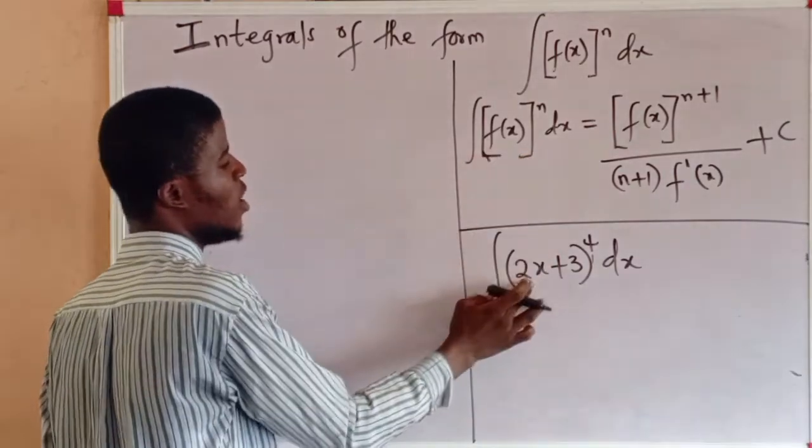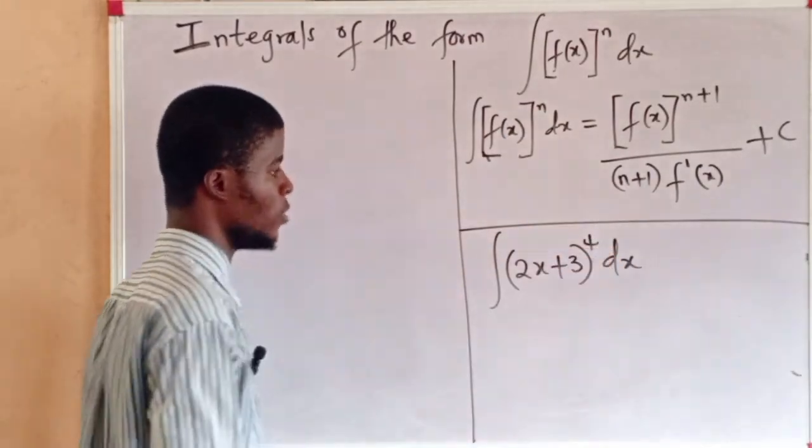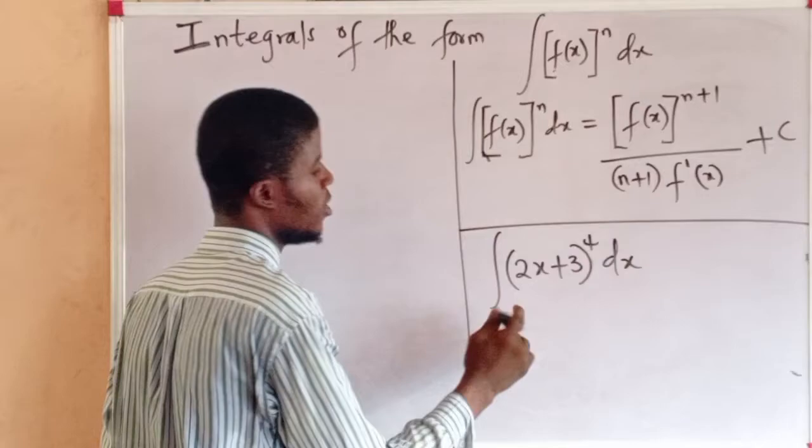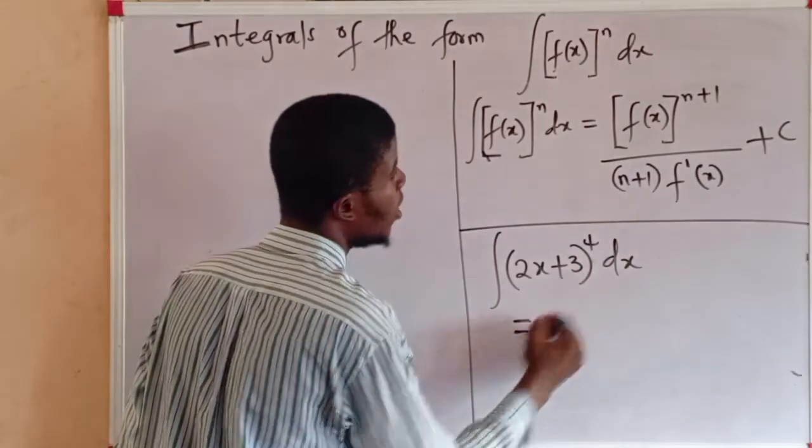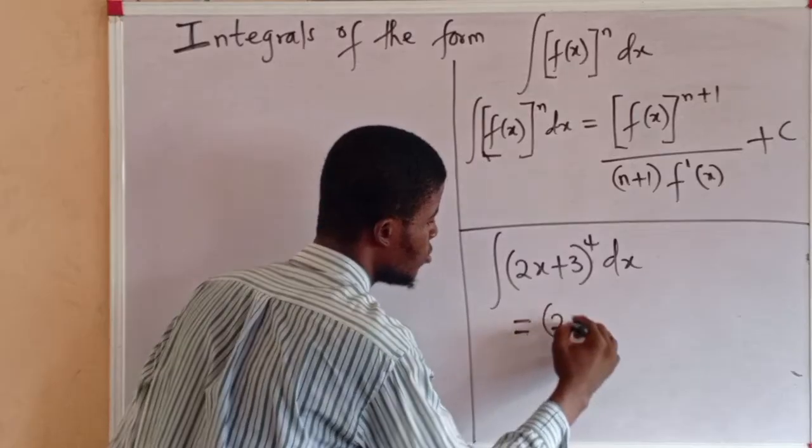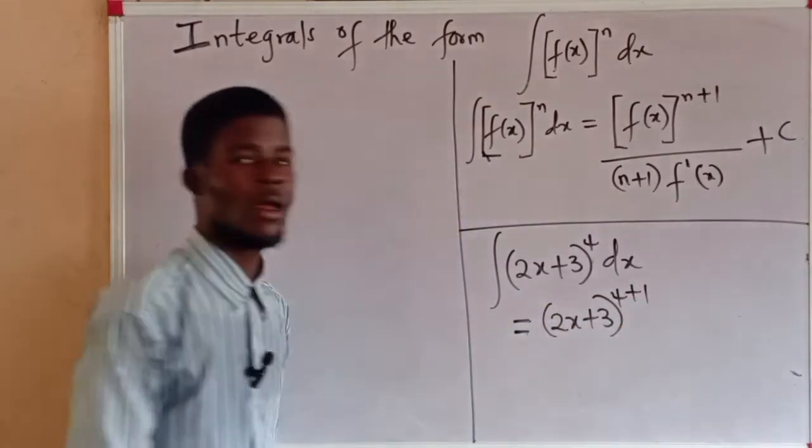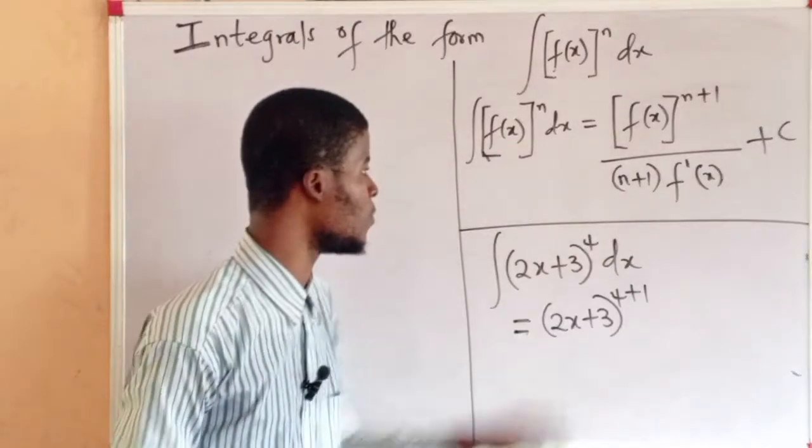f(x) here now is 2x plus 3, and n is to the power of 4. Applying the formula, it is equal to f(x) to the power of n plus 1. That is 2x plus 3 all to the power of 4 plus 1. n is 4.